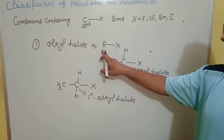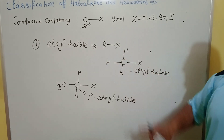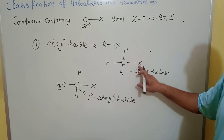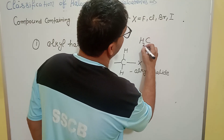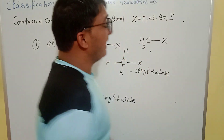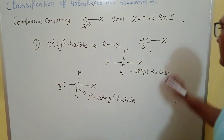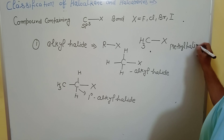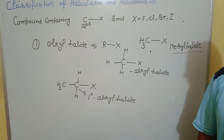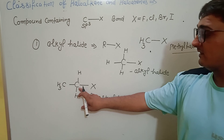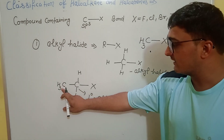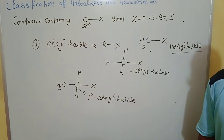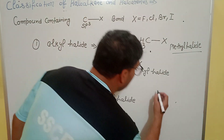In alkyl halides (RX), R is the alkyl group. When a CH3 group is attached to the halogen, it is called methyl halide. When the carbon bearing the halogen is directly attached to one carbon, it is called a primary alkyl halide.